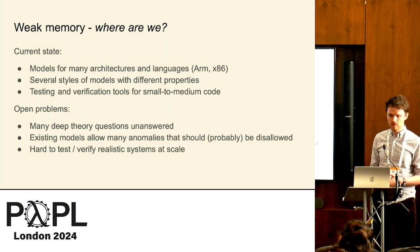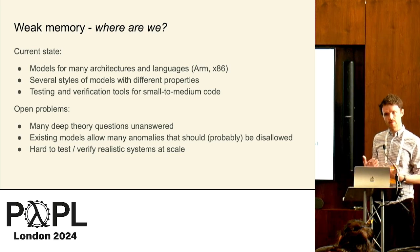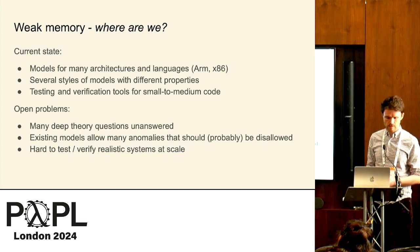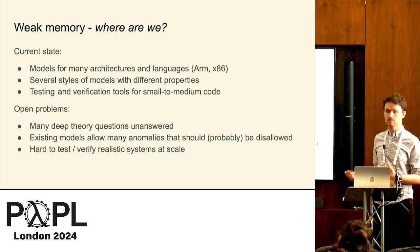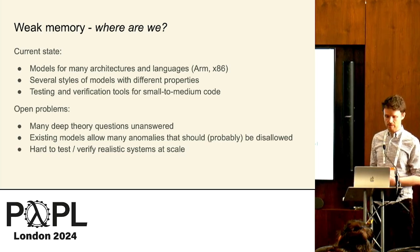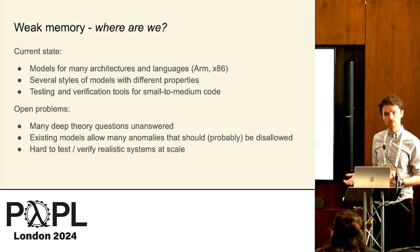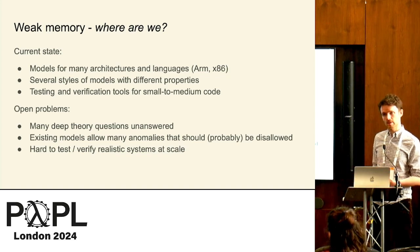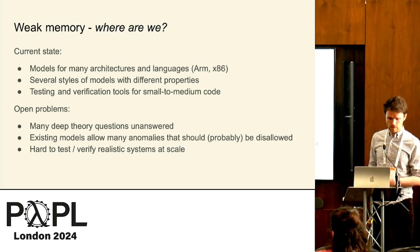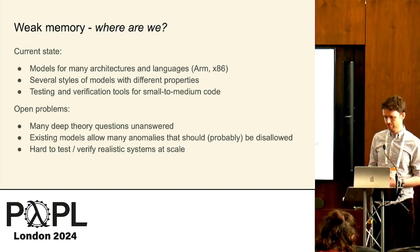For example, there are many deep theory questions that are unanswered. The existing models allow lots of anomalies, and the hardware allows weird anomalies that we probably don't want to allow, but it's hard to justify that without good theories. And it's very hard to test and verify realistic systems at scale.